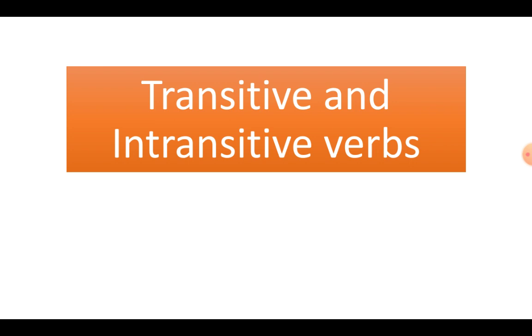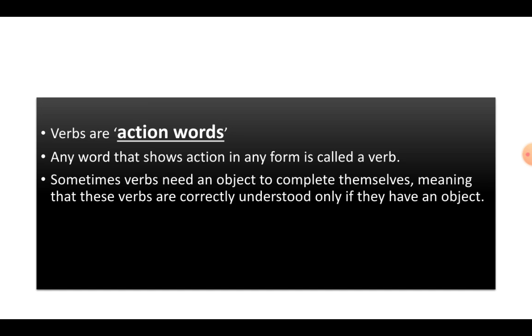Now, you know what are verbs? Verbs are action words. Any word that shows action in any form is called a verb. Everybody knows this. Now, what happens sometimes, like in some sentences, verbs need an object to complete themselves and that these verbs are correctly understood only if they have an object.